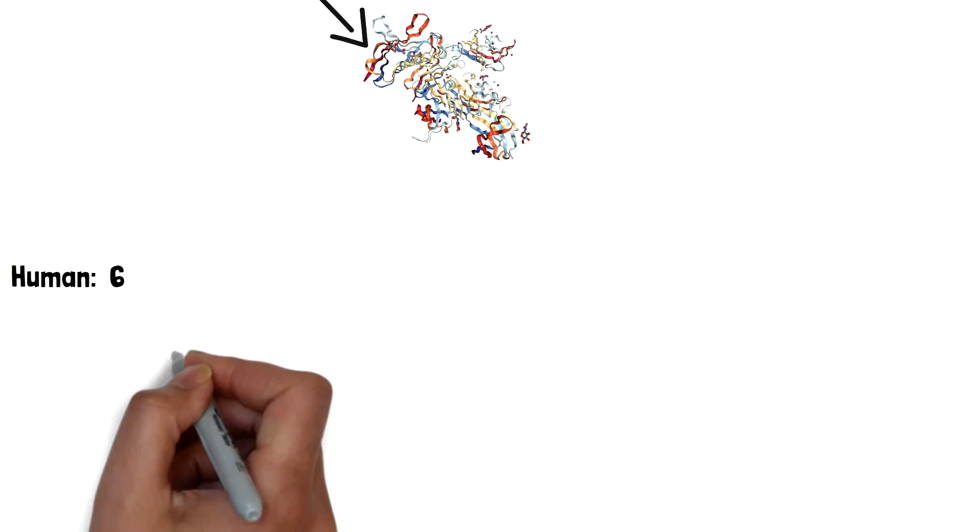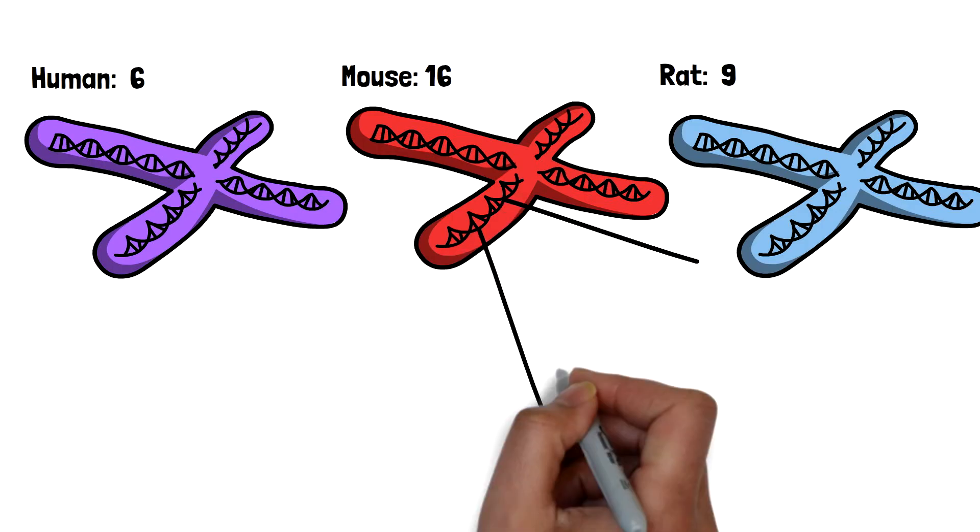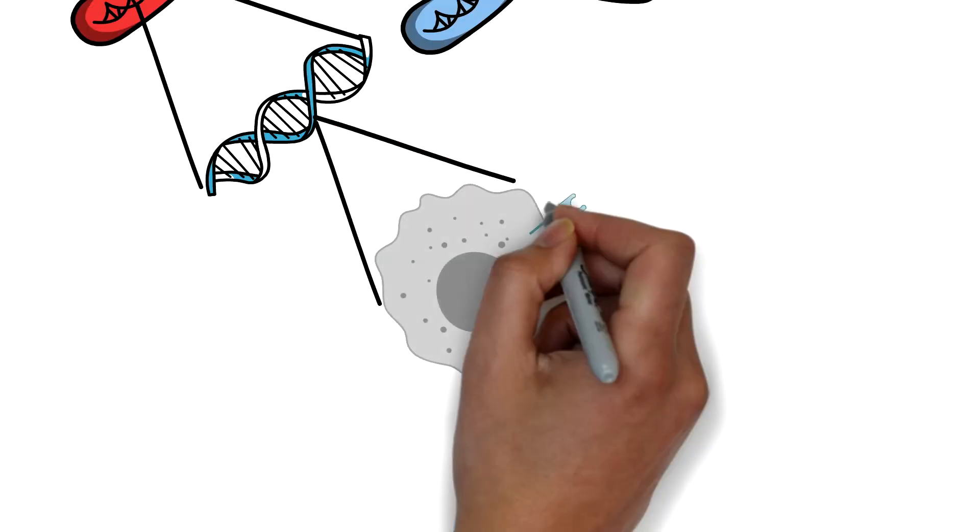Found in human chromosome 6, mouse chromosome 16, and rat chromosome 9, this gene codes for a transmembrane receptor protein in the immunoglobulin superfamily, TREM2.